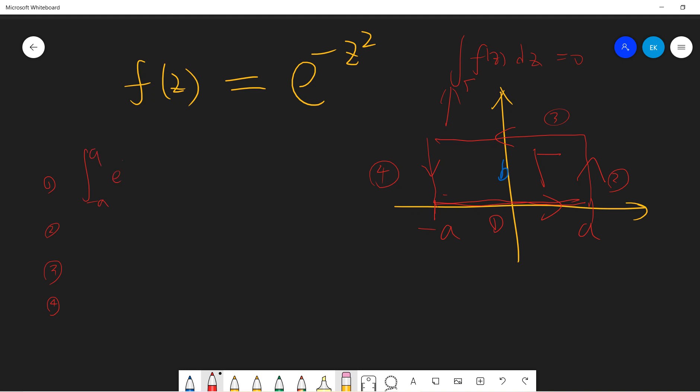The first integral is from minus a to a: integral of exponential negative x squared dx. The third one is the same as the first one; the only difference is that x needs to be shifted by ib because this is x plus ib, and it goes from the negative direction, so it goes from a to negative a.